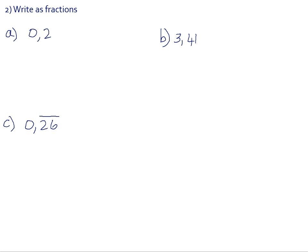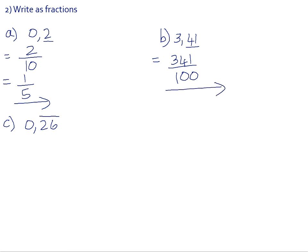Writing decimals as fractions: for normal decimals it's very straightforward. You look at the number of decimal places — that tells you how many zeros on your power of 10. You write whatever digits are in the decimal as your numerator. Don't forget that if your fraction can simplify, you must simplify it. For 3.41, which has two decimal places, it will be 341 over 100, and that does not simplify.